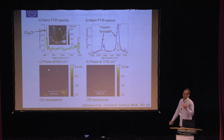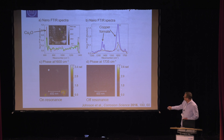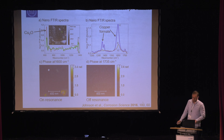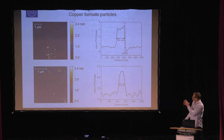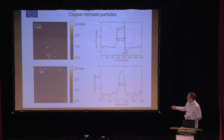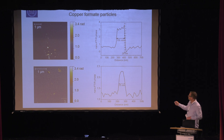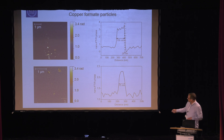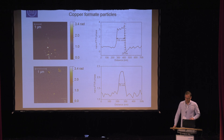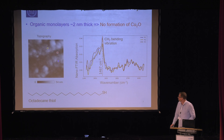Just to confirm and rule out artifacts, we also scanned at 1735 wavenumbers where we're off-resonance, and as you can see, there's nothing there. We also wanted to know the spatial resolution, so we scanned over one particle here — a 150 nanometer particle. Scanning over the edge, the resolution is 20 nanometers. And this 75 nanometer diameter particle also confirmed to us: yes, we can really use this to study our corrosion products.